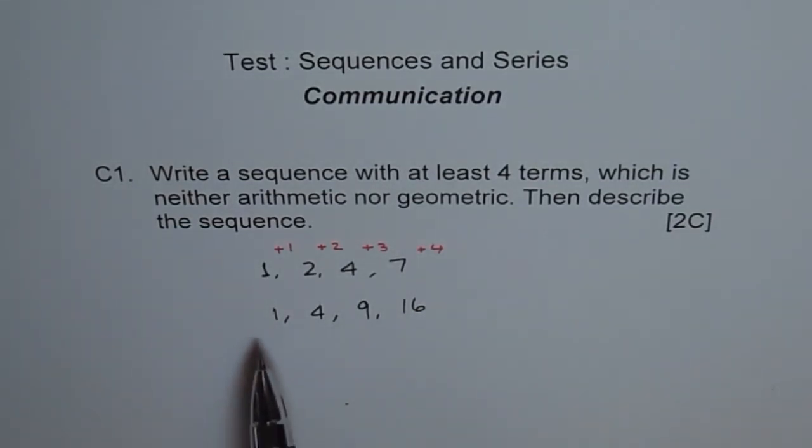Where every term is square of the term number. It is a proper sequence which we can define. But it is not a geometric sequence, nor is it an arithmetic sequence. Do you understand? So these are some of the examples which you can try. Thank you.